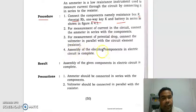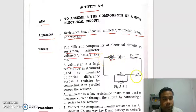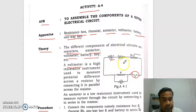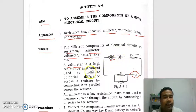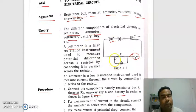Assembly of the electrical components in electric circuit is complete. After connection, when the key is closed, current starts to flow — the battery sends the current through the circuit. Then the circuit is completed.